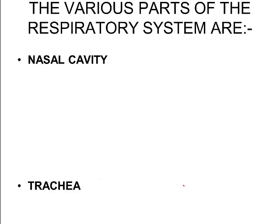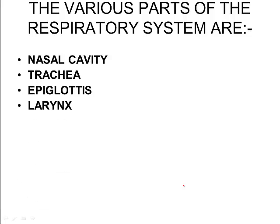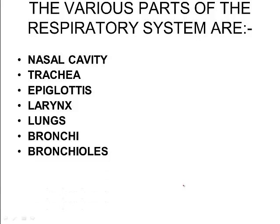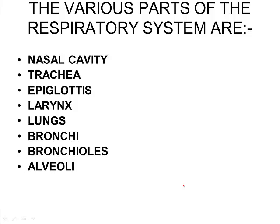There are lots of different parts of the respiratory system. You have the nasal cavity — that's your nose — your trachea is your windpipe, the epiglottis keeps you from choking when you breathe in and swallow, your larynx is your voice box, then you have two lungs with bronchi that branch off into them, those branch into smaller bronchioles, and the bronchioles end in little air sacs called alveoli. The diaphragm muscle contracts when you take a breath in, pulling air into your body.